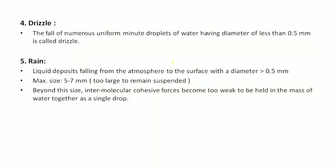Move on to the next form like drizzle. So drizzle means what? The fall of numerous uniform minute droplets of water having diameter of less than 0.5 mm is called drizzle.